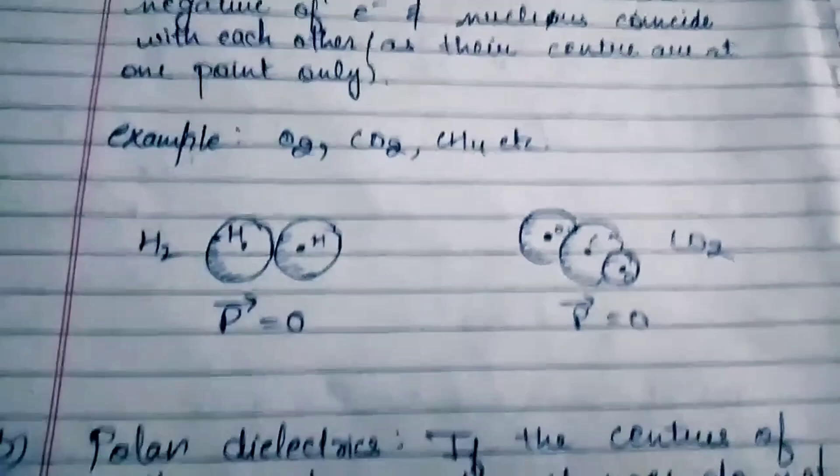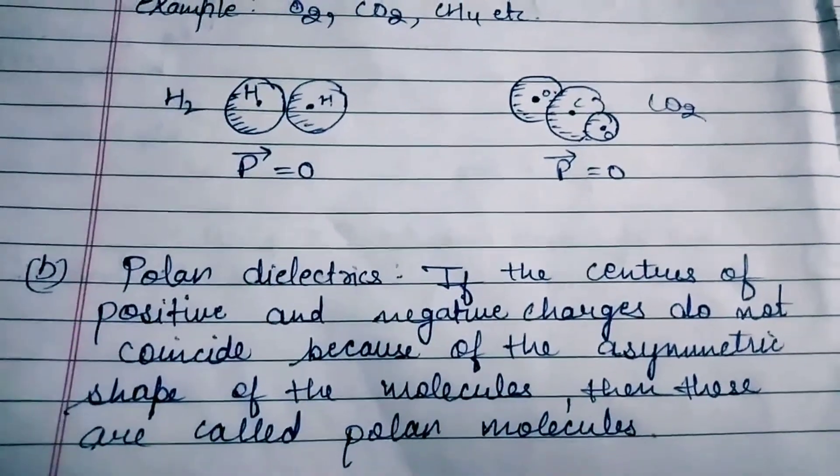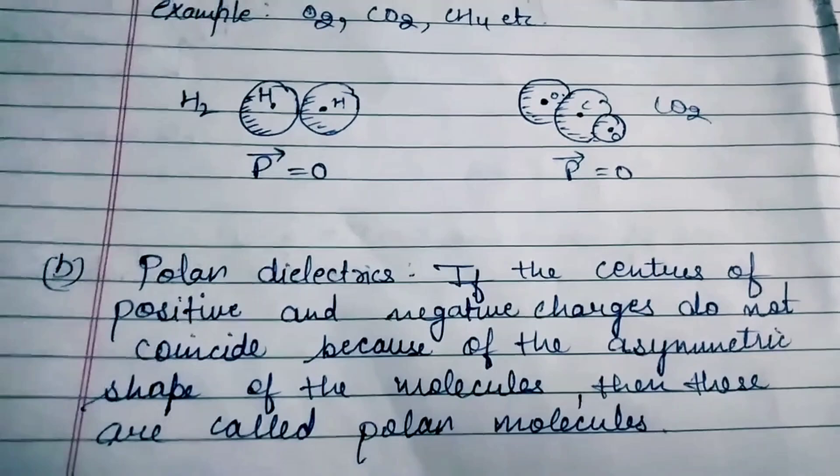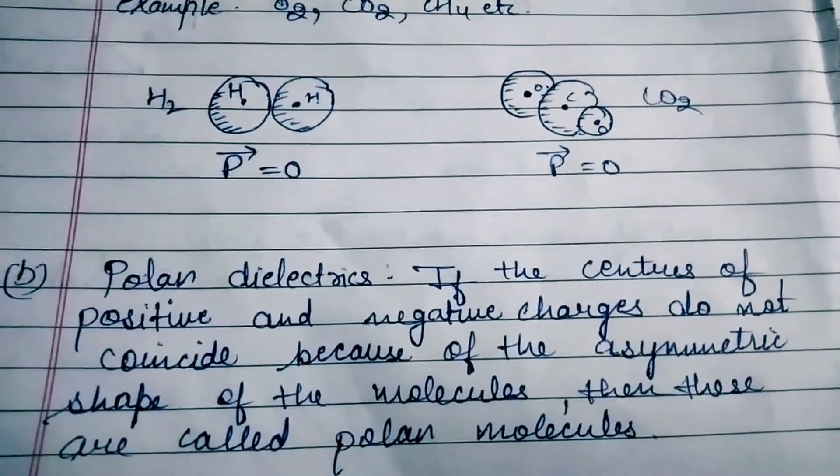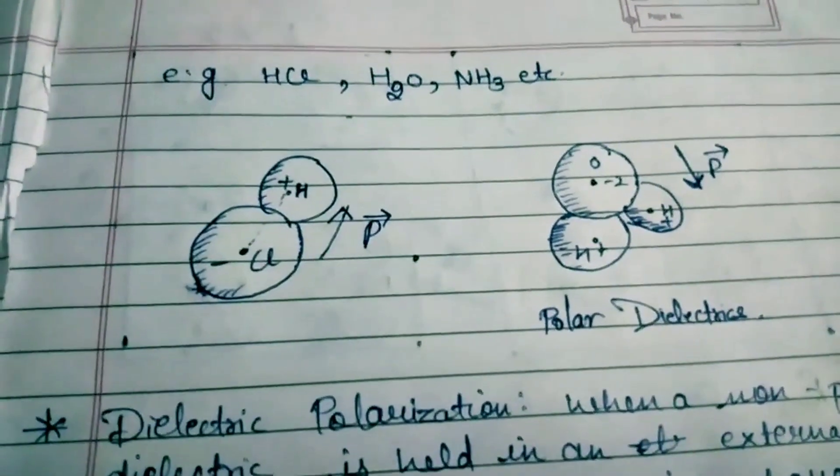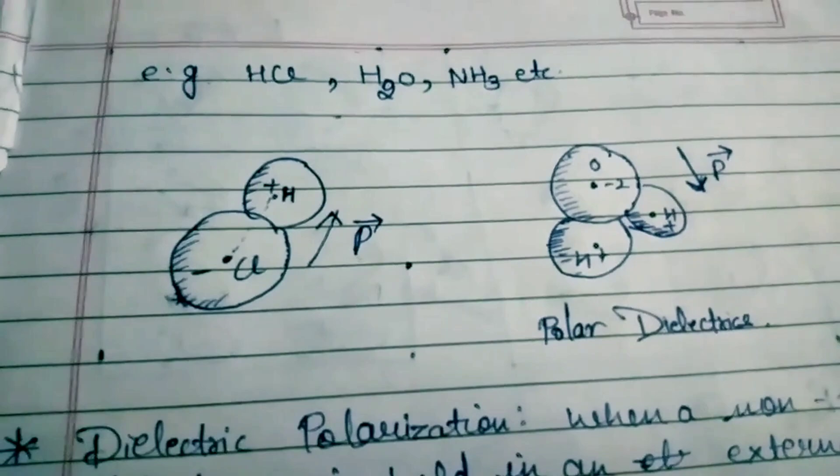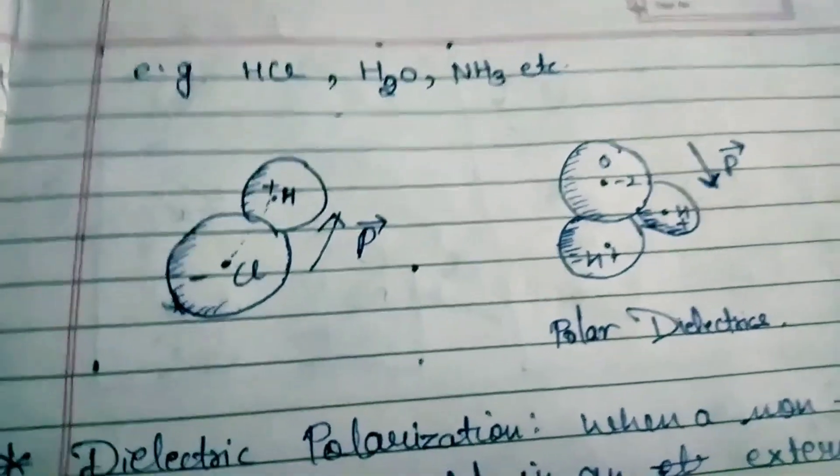The second type is polar dielectrics. If the center of the positive and negative charges do not coincide because of the asymmetric shape of the molecules, they are called polar molecules. We have distance between the charges. Examples include HCl, H2O, and NH3. These are polar molecules or polar dielectrics.